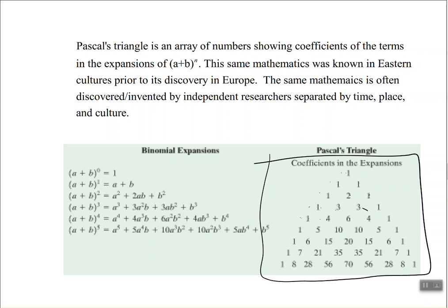Continuing on to the 5th power: 1 plus 4 is 5, 4 plus 6 is 10, 6 plus 4 is 10, 4 plus 1 is 5 — giving 1, 5, 10, 10, 5, 1. You can see on the left-hand side that the coefficients match up. For (a + b) to the 4th, you have coefficients 1, 4, 6, 4, 1 — which means you don't have to use the binomial coefficient formula. You can use either the binomial coefficient or Pascal's triangle to find your coefficients.